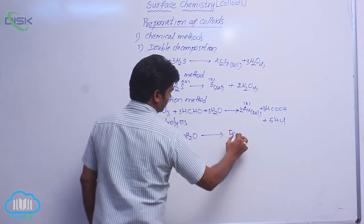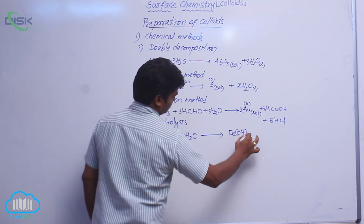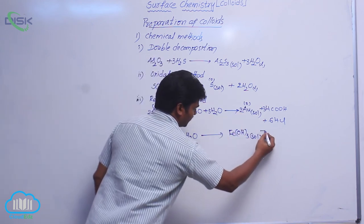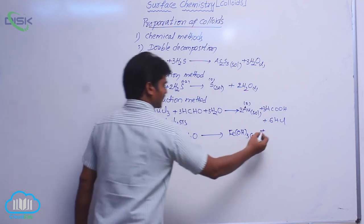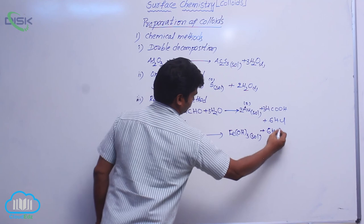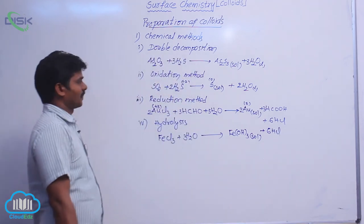Then it will form Fe(OH)3, ferric hydroxide. Ferric hydroxide sol is formed along with the product, here 6 HCl.